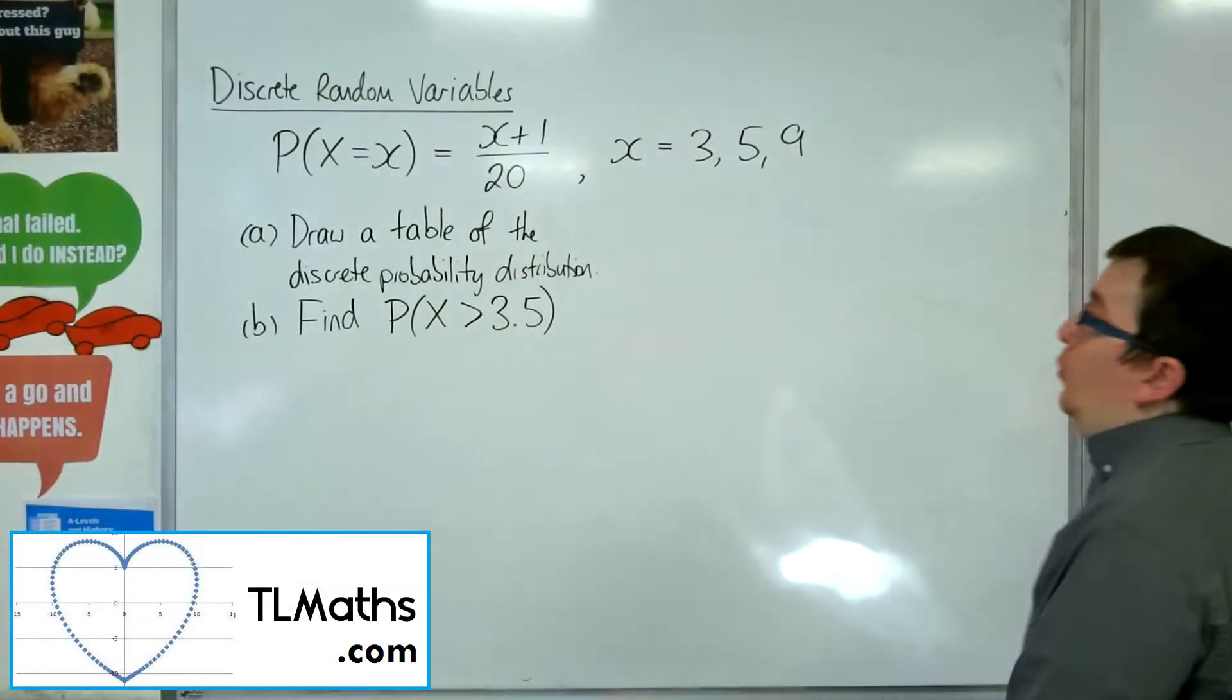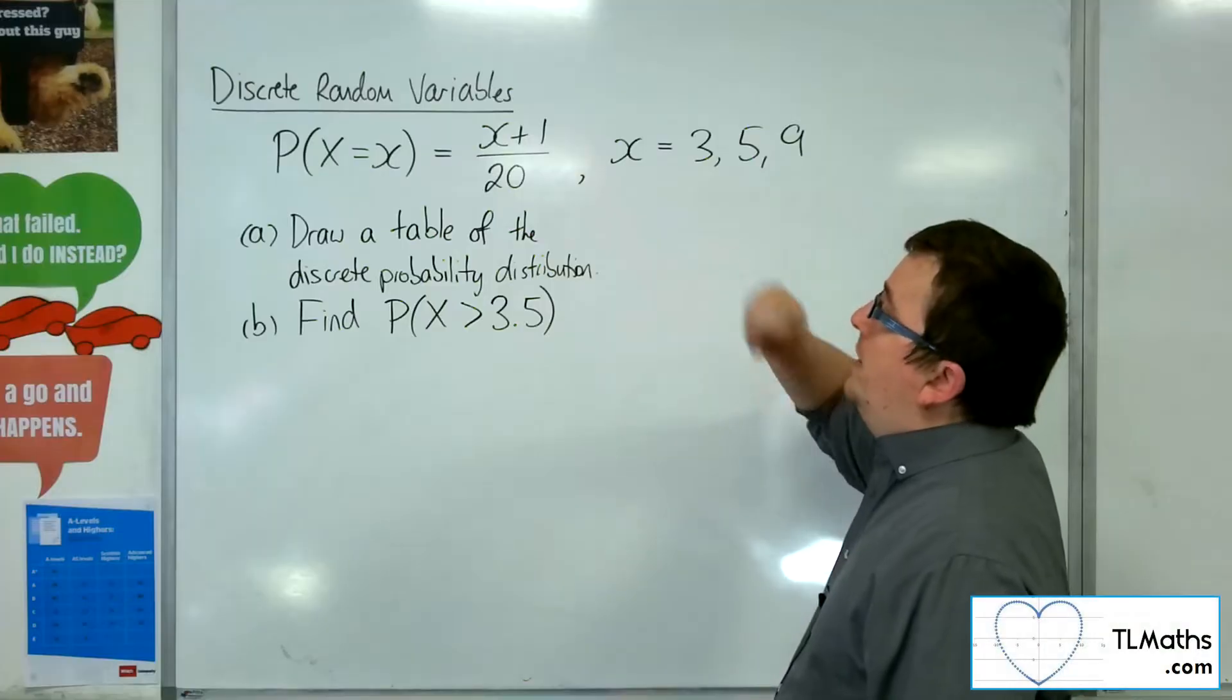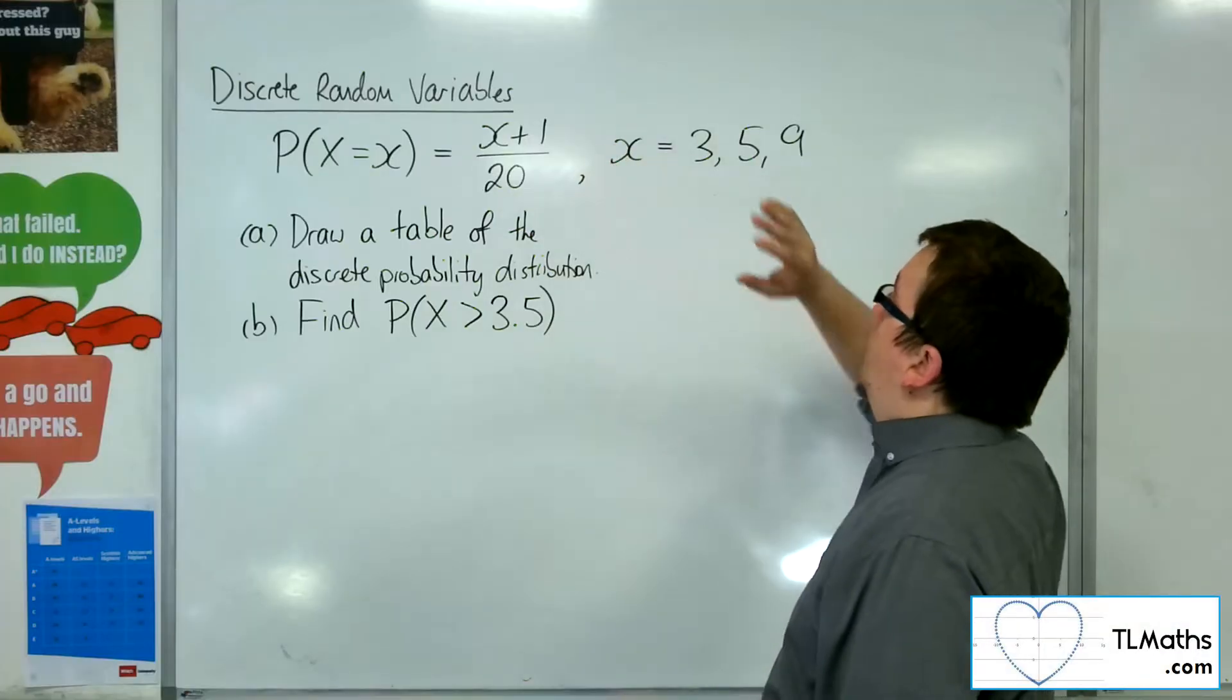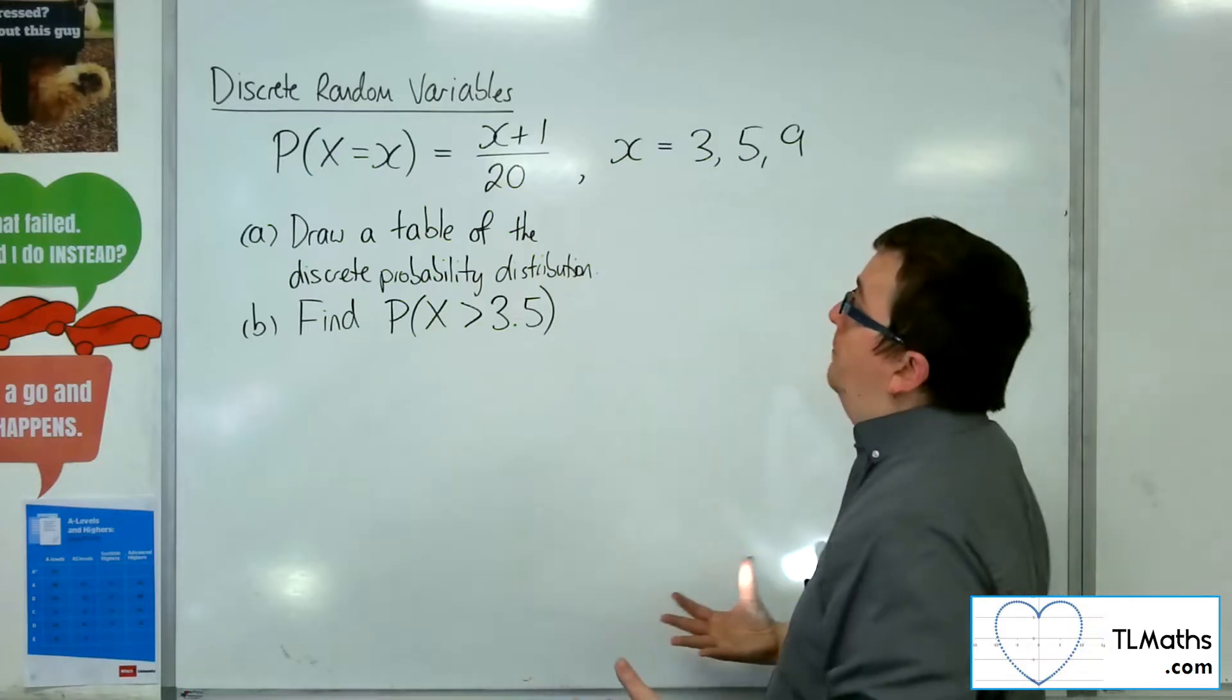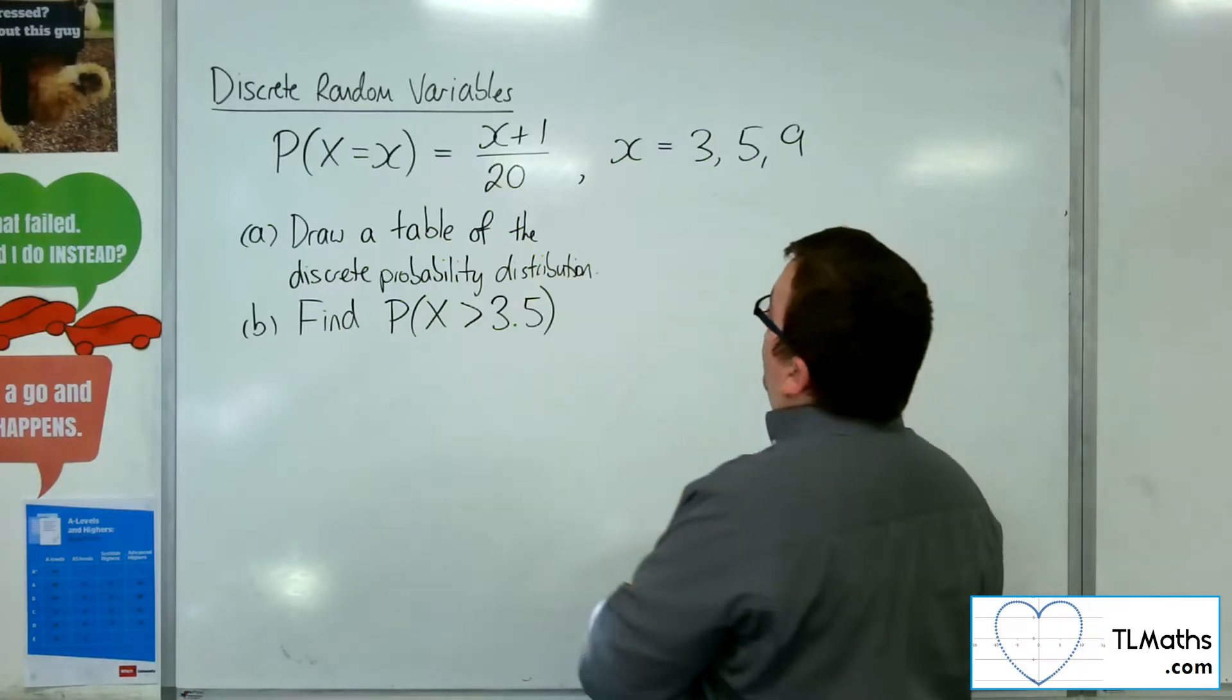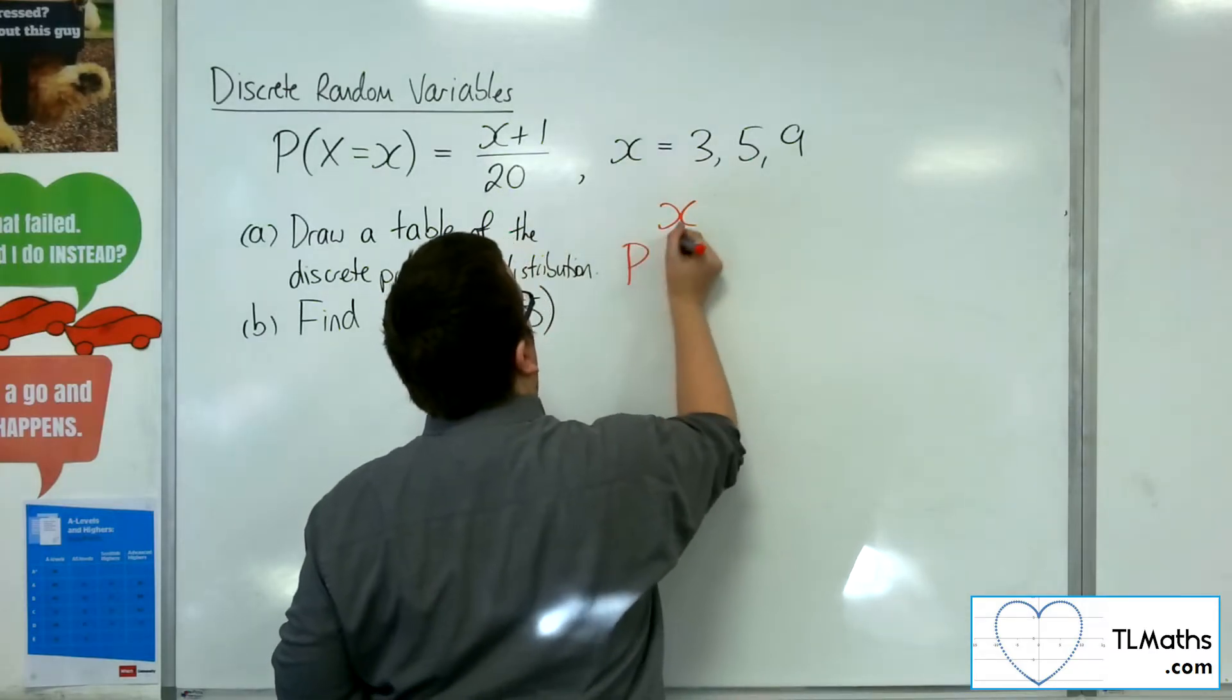Okay, so in this video we've got a discrete probability distribution given as a function. The first thing that we need to do is draw a table, putting it back into tabular form. We're going to want one row to represent the x's and one for the probabilities.